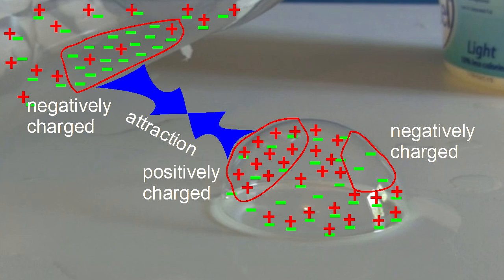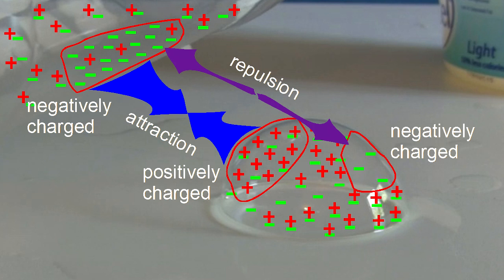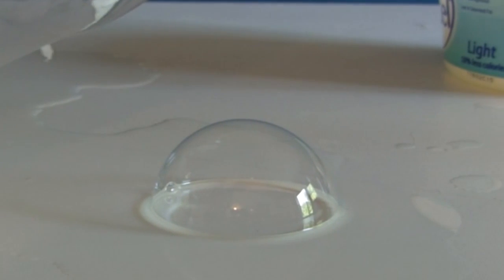And just as like charges repel each other, opposite charges attract each other. So the negatively charged bottle attracts the now positively charged side of the bubble. It also still repels the negatively charged side of the bubble, but that's further away, so that repulsion is weaker. The attraction between the negatively charged bottle and the positively charged side of the bubble is stronger and wins. The bubble moves towards the bottle.